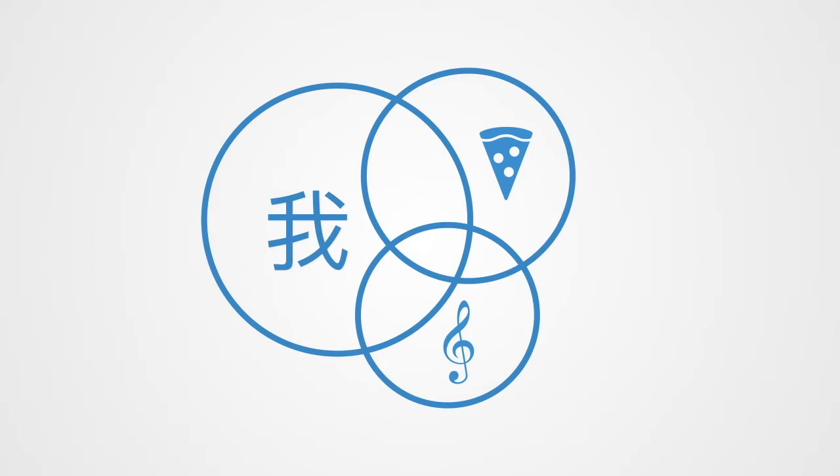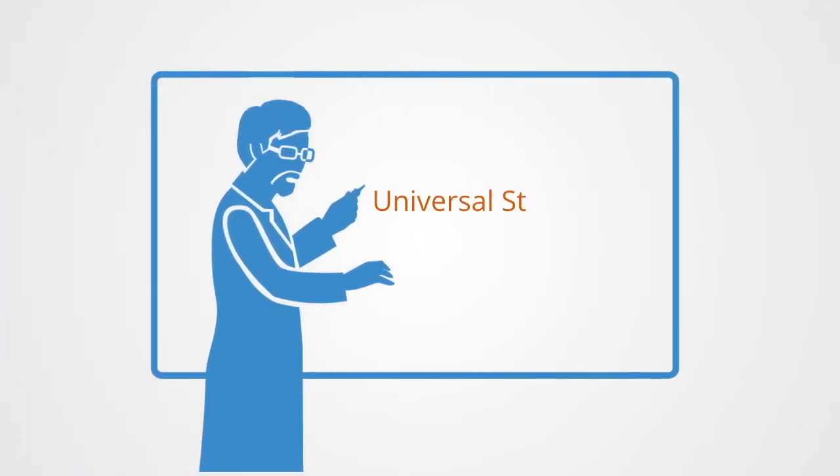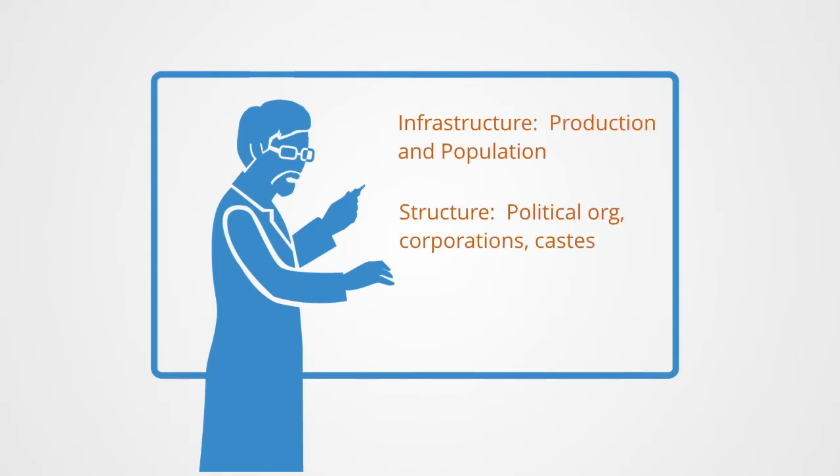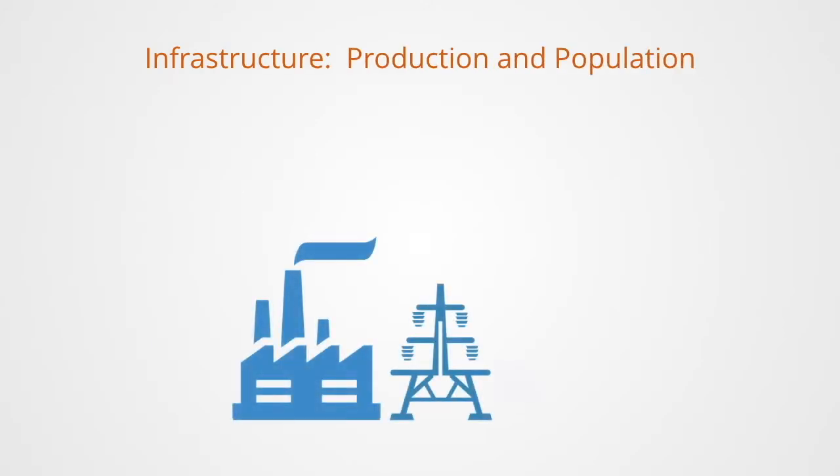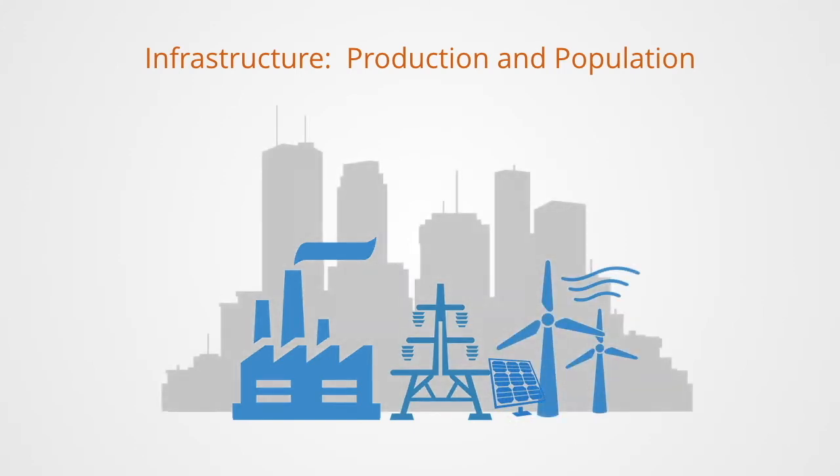The anthropologist Marvin Harris attempted to outline a universal structure of sociocultural systems. He mentioned infrastructure, which is production and population; structure, which is social and behavioral like political organizations, corporations, castes; and a superstructure, which is values, concepts, beliefs, and norms. A society's infrastructure is its most basic components in the sense that without it physical survival is literally impossible. On their most basic material level, cultures constitute material artifacts such as production, which refers to technology, raw materials, energy sources, and demographics.